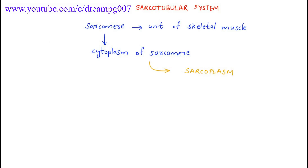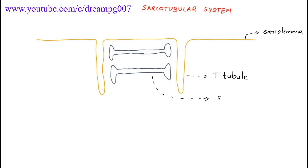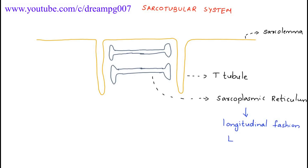Inside the sarcoplasm we have the sarco-tubular system, which contains t-tubules and sarcoplasmic reticulum. This is the sarcolemma, this is the t-tubule, and this is the sarcoplasmic reticulum. It is arranged in a longitudinal fashion, hence it is called L-tubules.